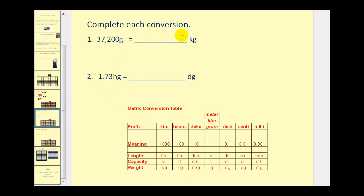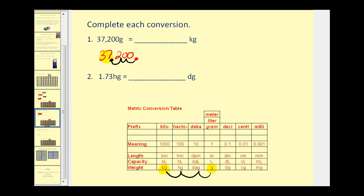Now let's look at two mass conversions. We're converting 37,200 grams to kilograms. We identify the grams column in the middle and the kilograms column, and we're moving three columns to the left, so we divide by ten to the third, or move the decimal point three places to the left. Starting with 37,200 and moving the decimal three places left gives us 37.2 kilograms.